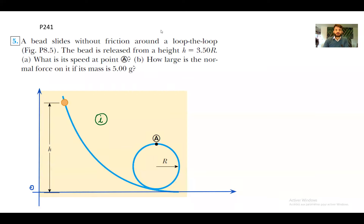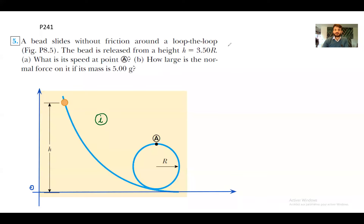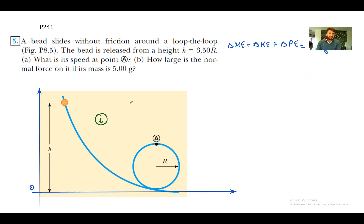With the reference set, we have an isolated system and we can write: delta mechanical energy equals delta kinetic plus delta potential, which equals the work done by friction, omega_f. In this case we have a trajectory without friction, which means omega_f equals zero, so we have conservation of mechanical energy.